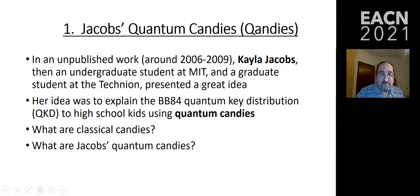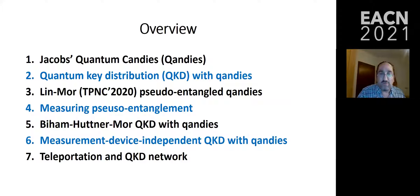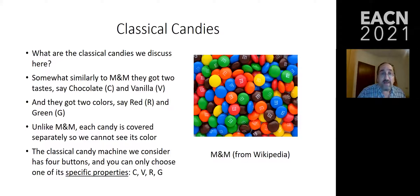Her idea was to explain the BB84 quantum key distribution using quantum candies. I will first explain the difference between classical and quantum candies, then quantum key distribution, then how to introduce entanglement into this method, and how it relates to quantum key distribution with the BHM method, which is closely related to measurement device independent QKD, and finally, to networks.